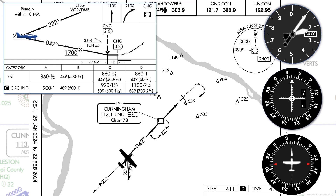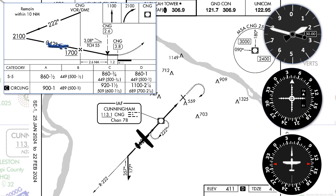Now that we're established inbound, we can leave the procedure turn altitude of 2,100 feet and go down to 1,700, which is where we'll be at the final approach fix — the VOR station.